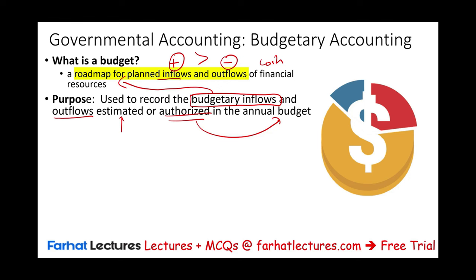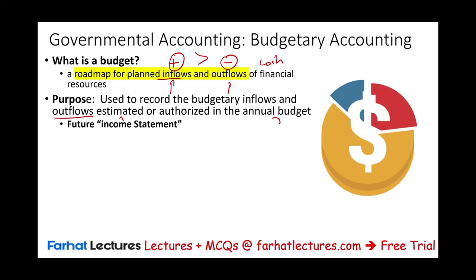The government — whether it's a state or local government — plans ahead. They prepare a budget and estimate how much they are going to be generating in inflows of cash as well as outflows. Think of the budget as a future income statement — you're looking at how much you're going to be bringing in and how much you're going to be spending.